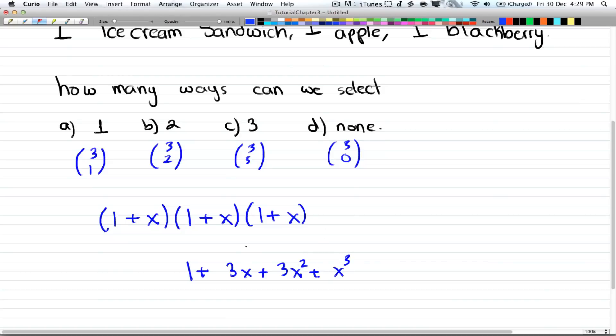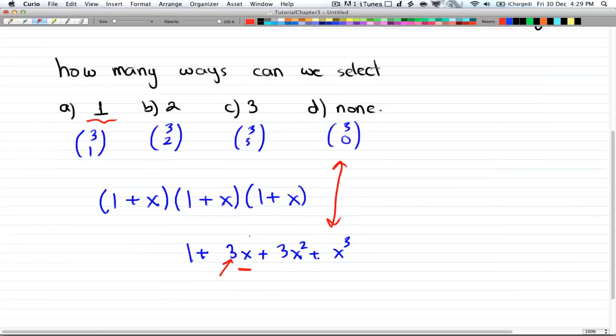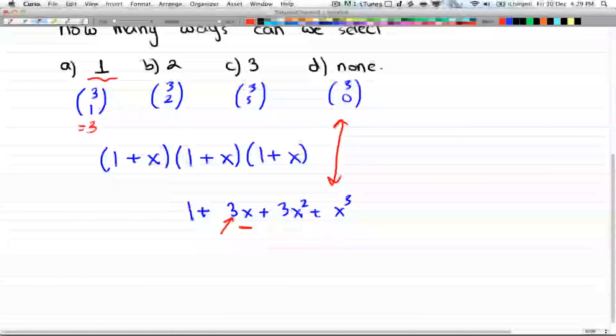Alright, well how do those two actually relate? If you look at it, then if you want one, how many ways can we select one object? Well, we just go to where x has a power of one. And here we have three, so we can select three ways. And notice that three choose one is indeed equal to three.